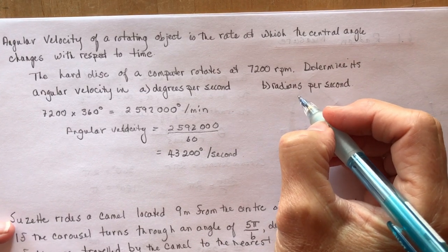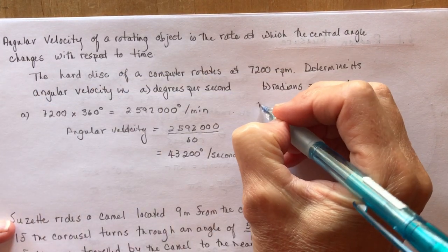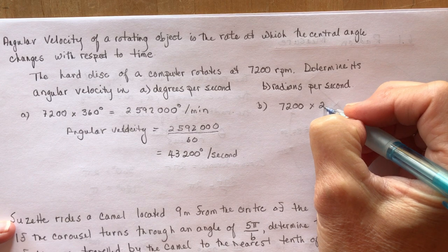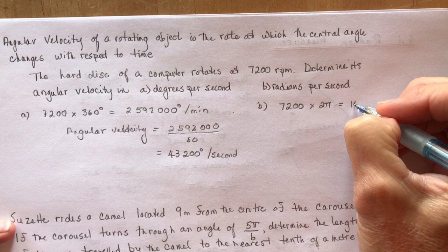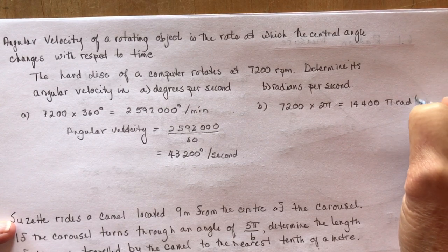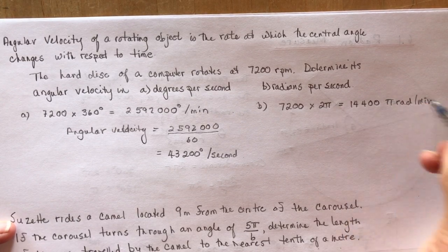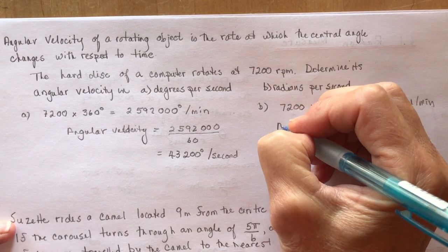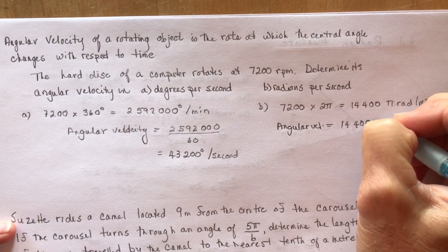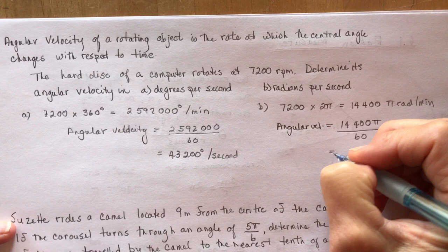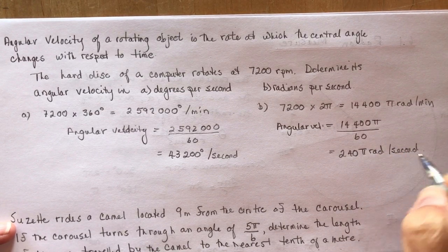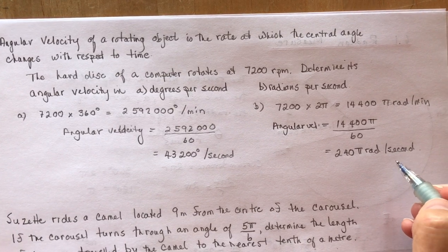Now let's do it in radians per second. We know how far it is around, so I have 7200 and this time I'm going to multiply it by 2π radians, that's a little easier math. So that's 14,400π radians per minute. That means the angular velocity is 14,400π divided by 60, which gives me 240π radians per second.